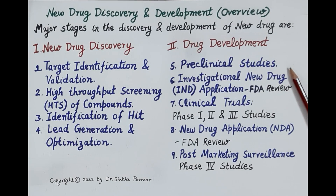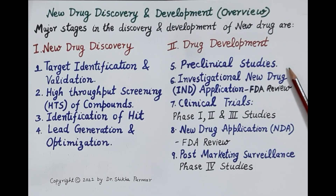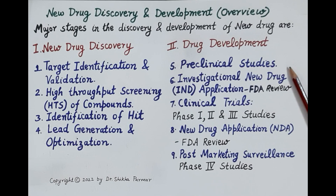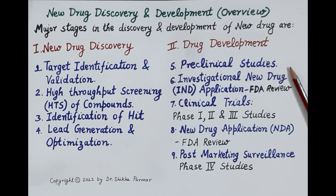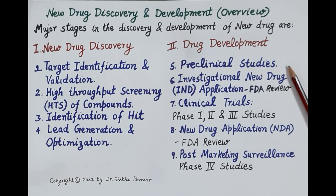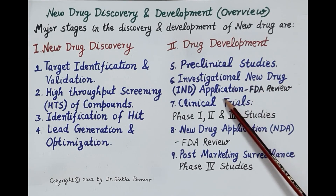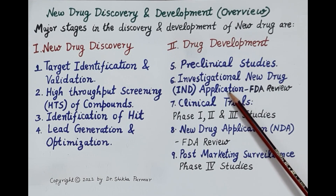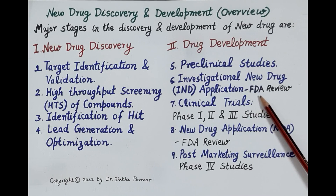The first step in drug development is pre-clinical studies, which refer to the testing of all 250 compounds in animals. By the end of pre-clinical studies, only around five compounds remain; all others are rejected. The process of pre-clinical studies takes around one to two years. Findings are compiled in an Investigational New Drug (IND) application, which is submitted to the FDA for review.